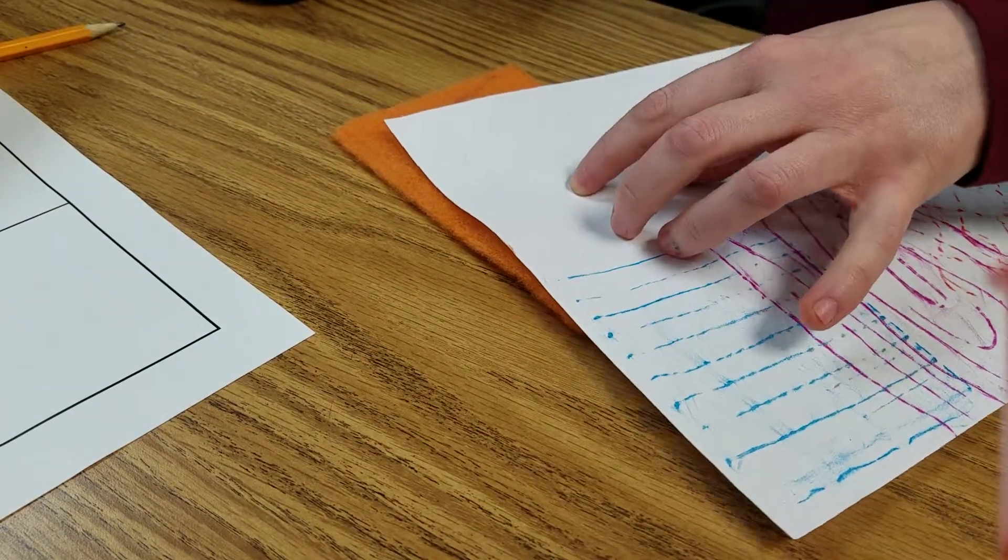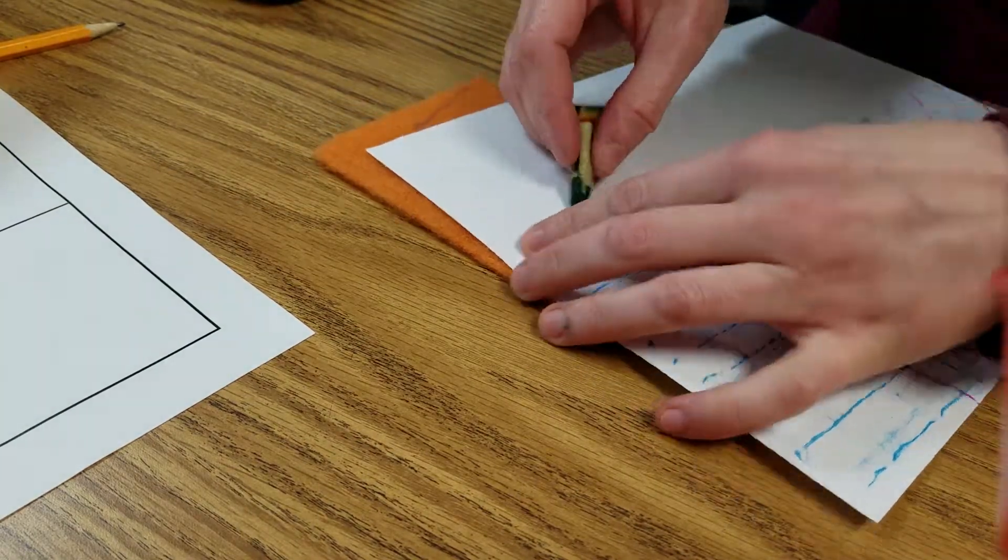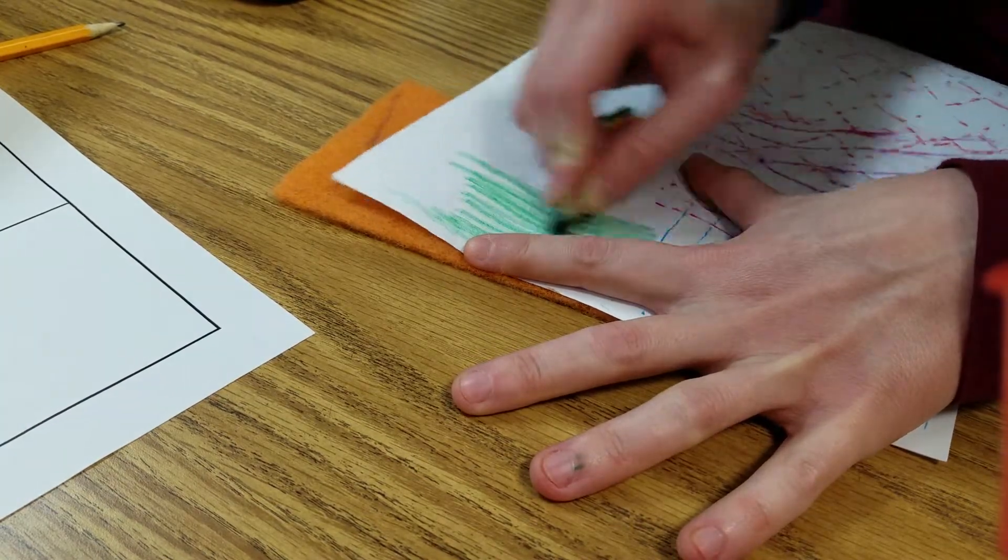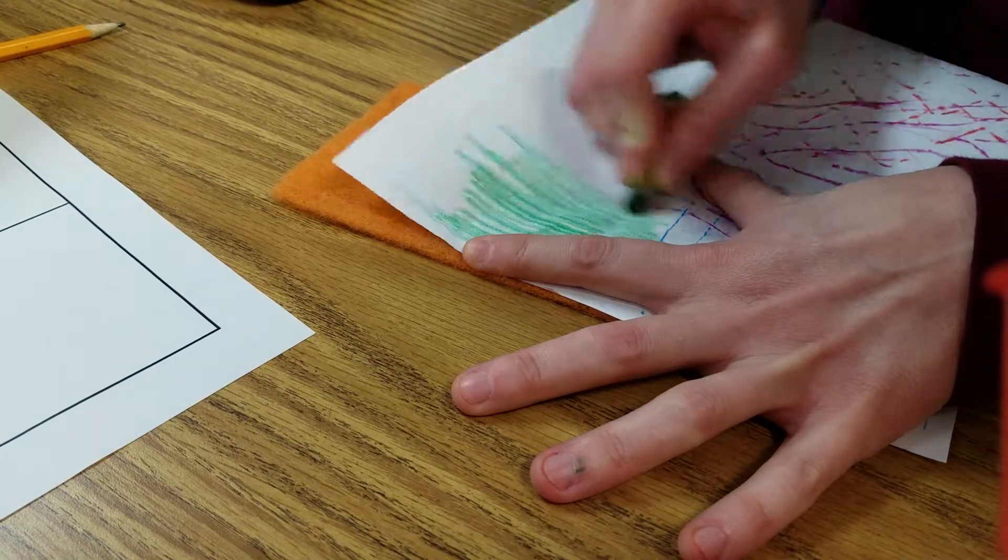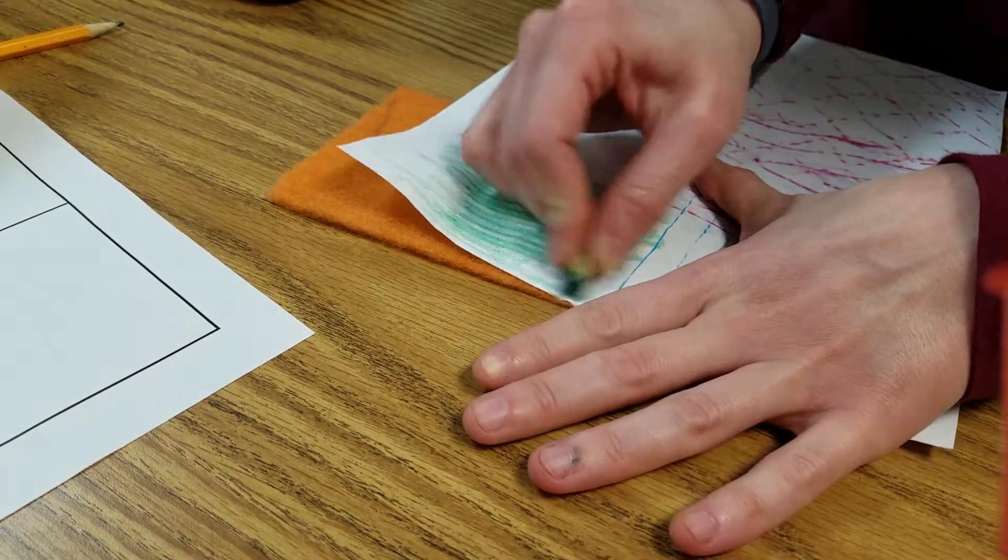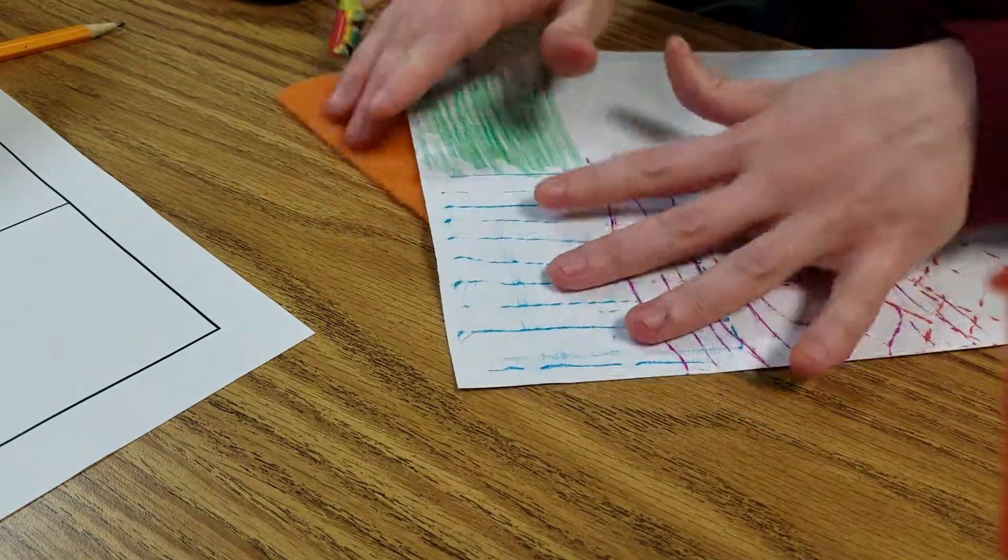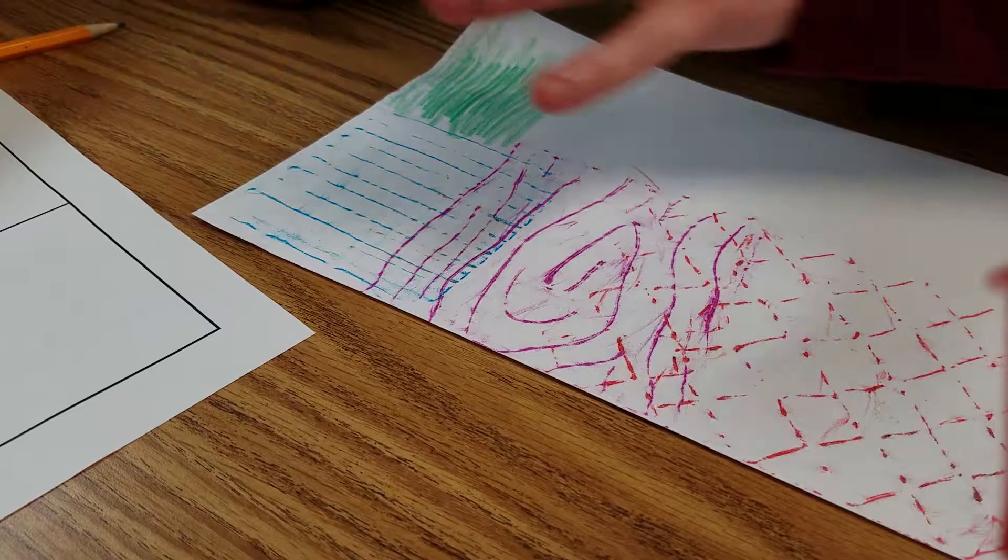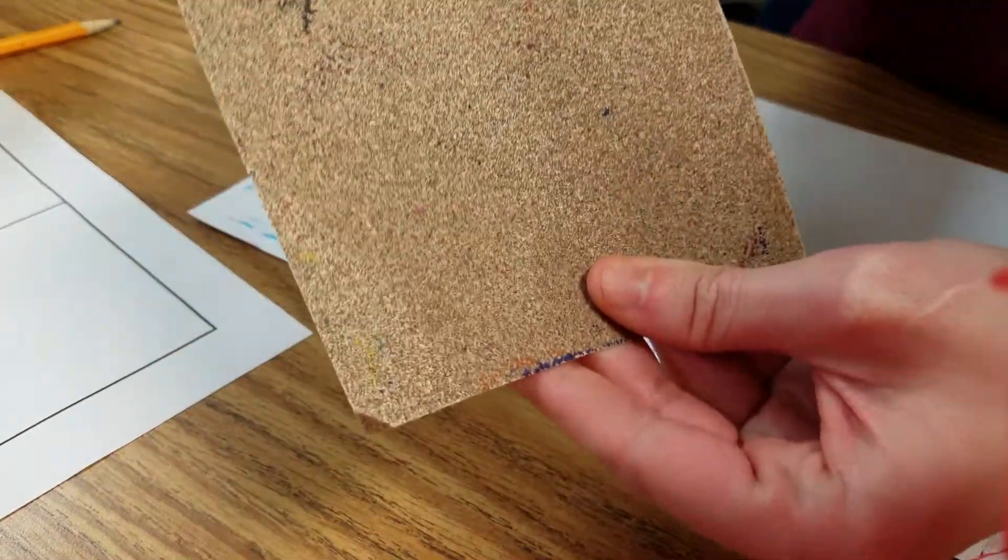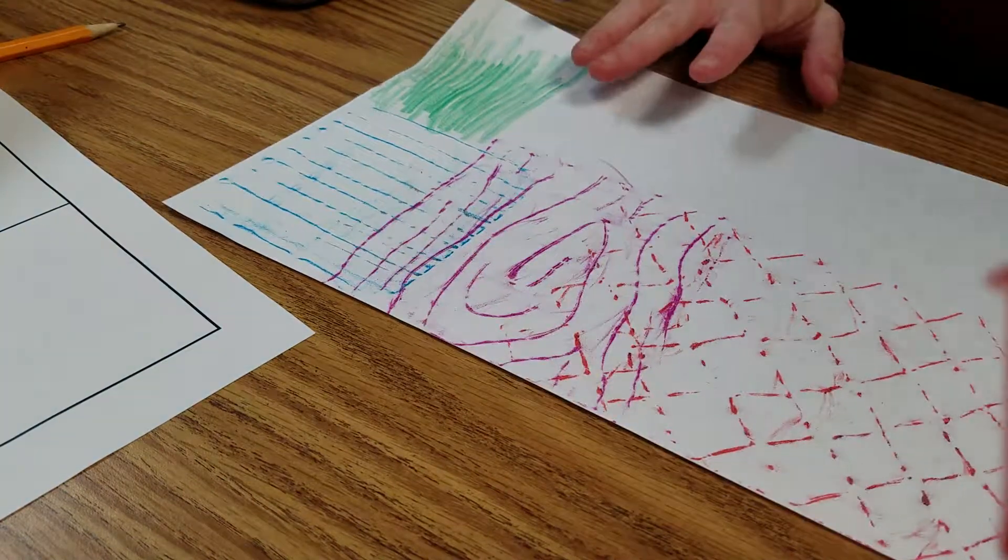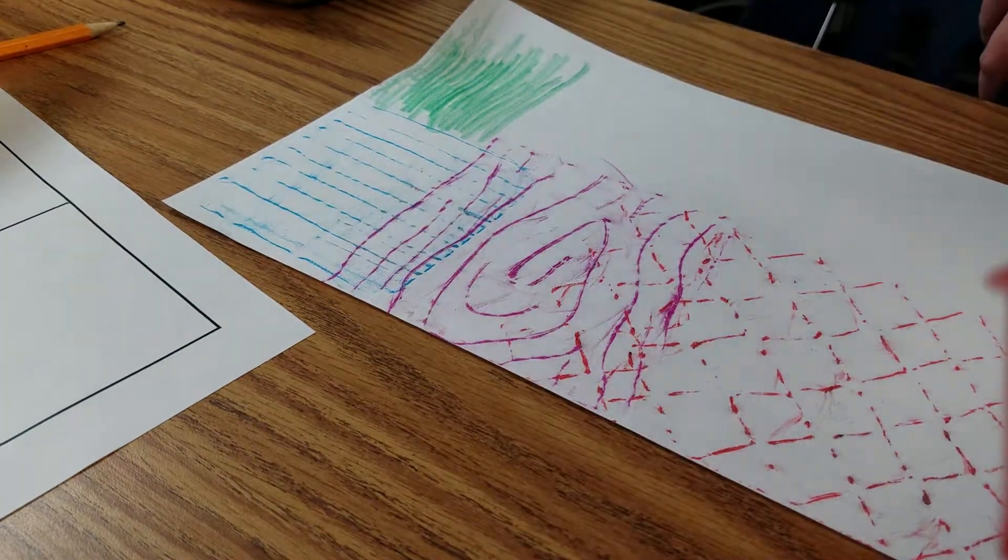Okay, so some textures can be smooth, some can be bumpy, rough, and all kinds of different textures, like the sandpaper. All right, so that's how you do a texture rubbing.